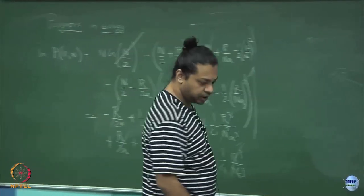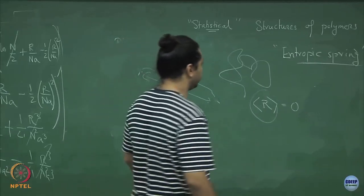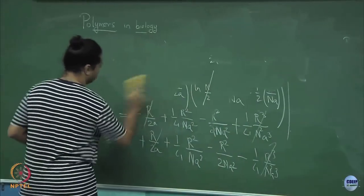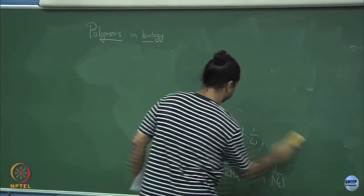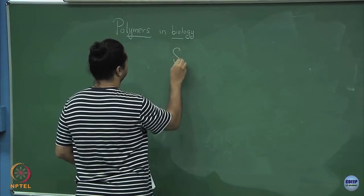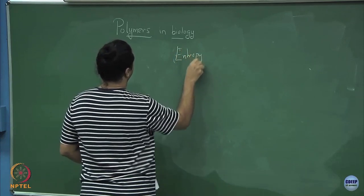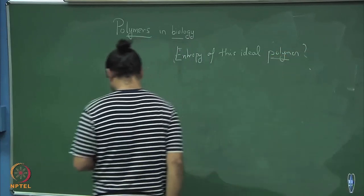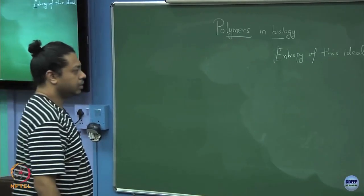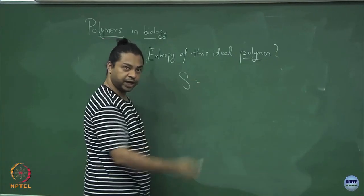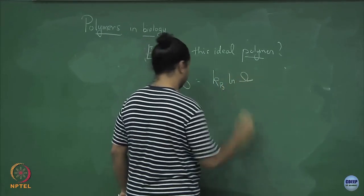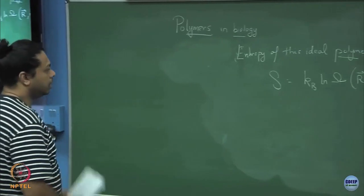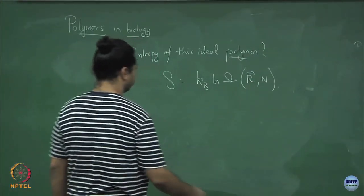Can we formalize this concept of the springiness of a polymer? It turns out we can. Let's write down the free energy of an ideal polymer. We start by writing what is the entropy. So what is the entropy of this ideal polymer? S is k_B log of omega, where omega is a function of the end-to-end distance and the number of monomers n. I know the probability, so I can write down omega.